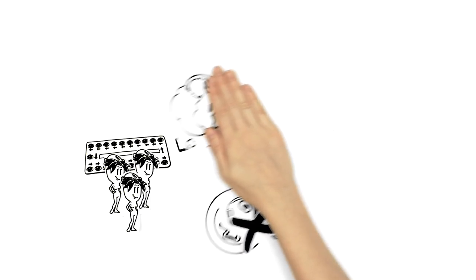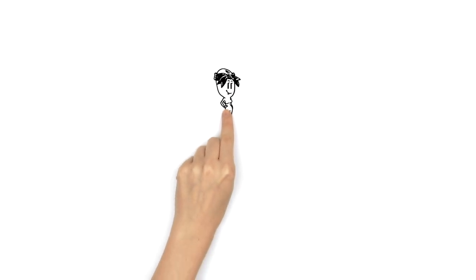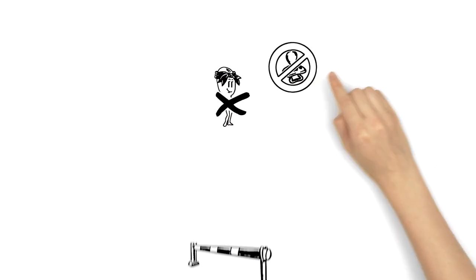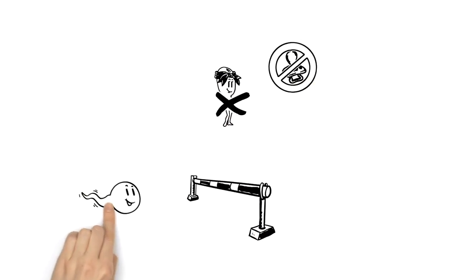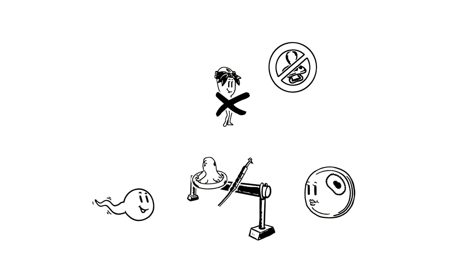But there are also contraceptives that work without hormones. They prevent a pregnancy by stopping the sperm on its way to the egg cell. Condoms, copper coils and the diaphragm work in this way.